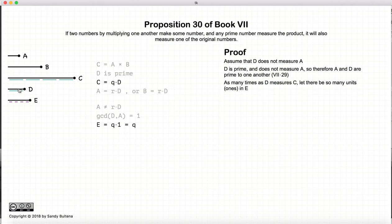Now as many times that D measures C, so in this particular example D measures C four times, let the number E be composed of four units so that C is now equal to D times E.